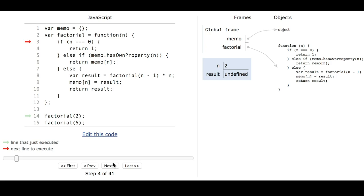We go to the function and 2 is not equal to 0, so this is false. The memo does not have a value for 2, so this is also false. So we go to the else, and that calculates by recursively calling factorial for n minus 1. So it's going to immediately call factorial of 1.